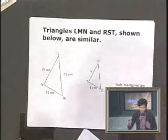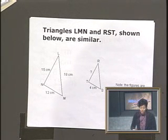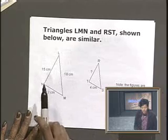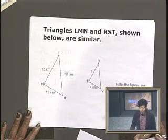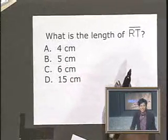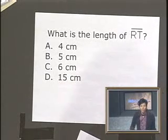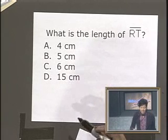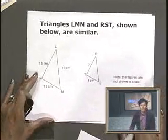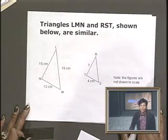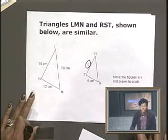Our next problem involves a little bit of geometry. Triangles LMN and RST shown below are similar. Similar means same shape, different size. Triangle LMN has three sides with known lengths, while triangle RST has only one known side length. The question is: what is the length of side RT? Is it A, 4 centimeters? B, 5 centimeters? C, 6 centimeters? Or D, 15 centimeters? To solve this, we're going to use proportions to find the missing side.